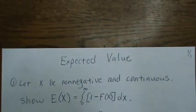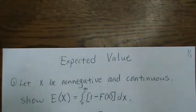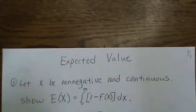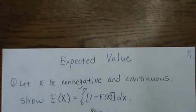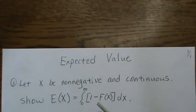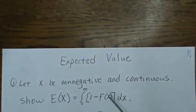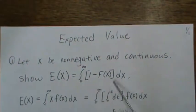Here we're going to look at the expected value and some alternative formulas for the expected value, both for the continuous and discrete case. We're also going to assume that x is non-negative, and let's first show that the expected value is equal to the integral from 0 to infinity of 1 minus F(x) dx, sometimes called the survivor function. Okay, let's start.